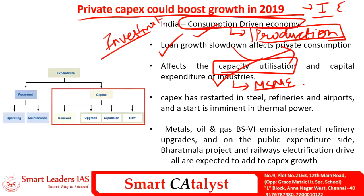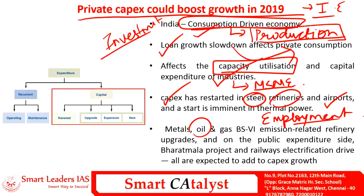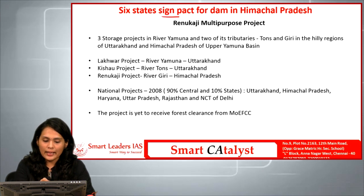Recently, capital expenditure growth has been re-initiated in the sectors of steel, refineries, as well as airports. This restarted capital infusion will definitely have spillover effects on other industries and will create more employment opportunities. Other ongoing projects dealing with oil and gas, Bharat Stage 6 emission-related projects, as well as large-scale projects such as Bharatmala and railway electrification will also add to capital expenditure growth in our country.